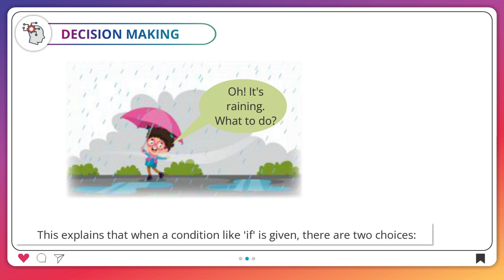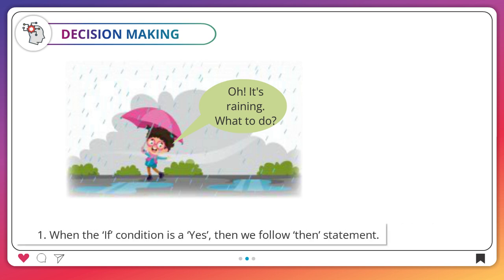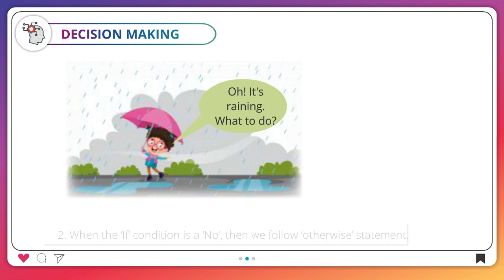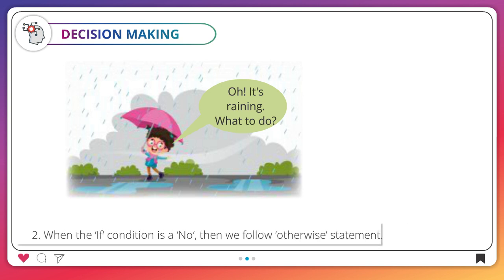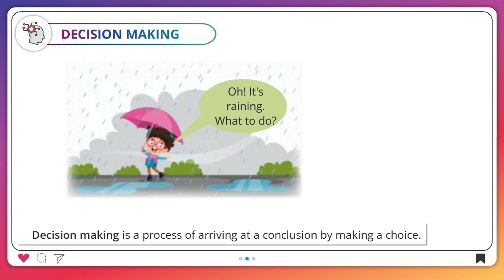This explains that when a condition like 'if' is given, there are two choices. One, when the if condition is a yes, then we follow the 'then' statement. Two, when the if condition is a no, then we follow the 'otherwise' statement. Decision making is a process of arriving at a conclusion by making a choice.